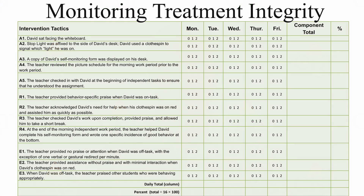Next, treatment integrity procedures are planned, such as monitoring the implementation of the intervention using a component checklist, which is then monitored by the teacher or implementer as well as by an outside observer. This information tells us the extent to which each intervention tactic was implemented as planned across ARA components. We cannot draw accurate conclusions about student performance unless treatment integrity data are also collected. It cannot simply be assumed that all intervention components are in place; treatment integrity data must be collected to make the most accurate conclusions.